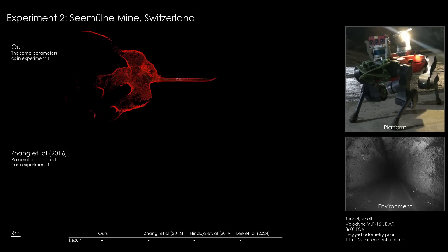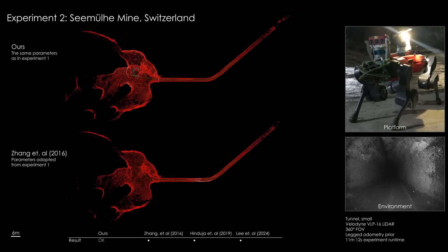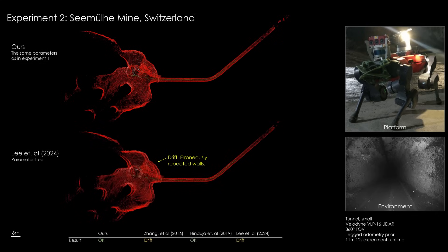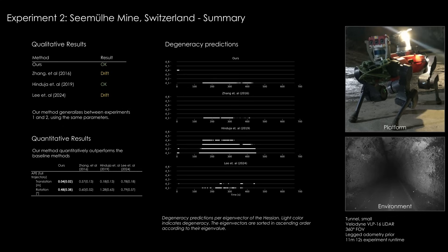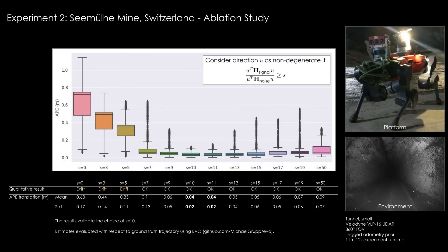The second experiment uses the same platform but with the full 360-degree field of view of the LiDAR. The robot traverses a confined tunnel section in a mine. The method of Sangatal yields translational drift. The method of Hinduatal does not exhibit degeneracy-induced drift. The method of Liatal yields translational drift. Our method does not exhibit degeneracy-induced drift and yields the best absolute pose errors overall. Our method successfully generalizes between experiments 1 and 2 with the same parameters. Additionally, we use this dataset to experimentally validate the choice of considering directions as non-degenerate when the signal is at least an order of magnitude higher than the noise.